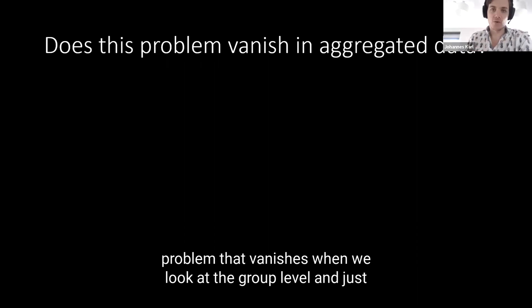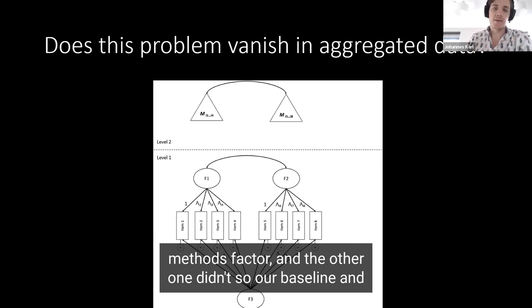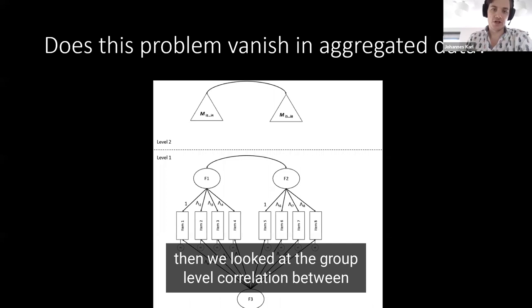The question then is, is this a problem that vanishes when we look at the group level? Just to check that, we ran a simulation study where we looked at two different groups. One group included a fixed methods factor, and the other one didn't, so our baseline. Then we looked at the group level correlation between constructs.